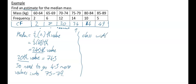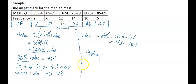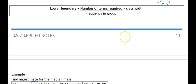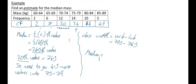The class width equals the upper class boundary minus the lower class boundary: 79.5 − 74.5 = 5. The formula for the median is: lower boundary + (number of items required ÷ frequency in the class) × class width. The lower class boundary of our median class is 74.5.